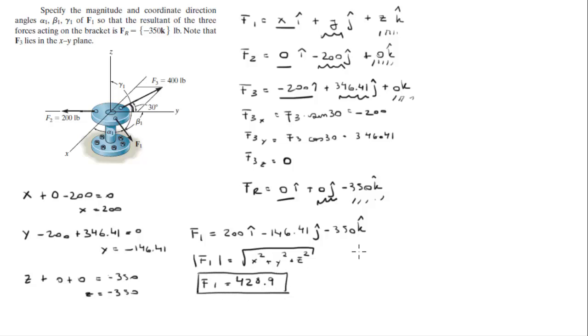To find the direction angles: this is the one it forms with the X, this is the one it forms with the Y, and this is the one it forms with the Z. You do the cosine inverse of the X over the magnitude, cosine inverse of the Y over the magnitude, and cosine inverse of the Z over the magnitude.